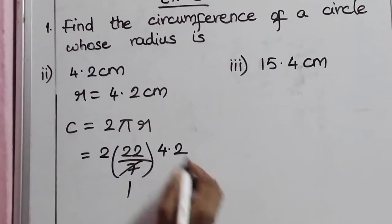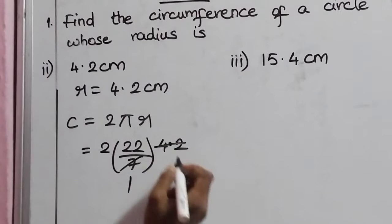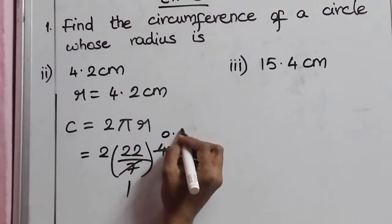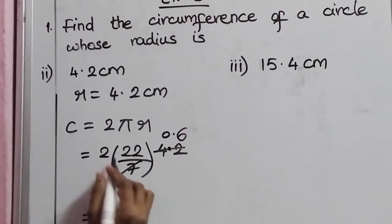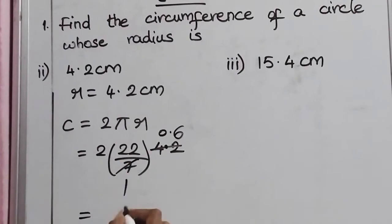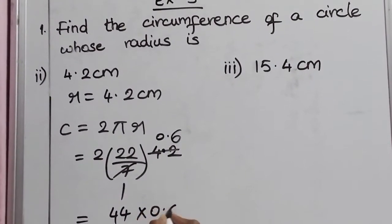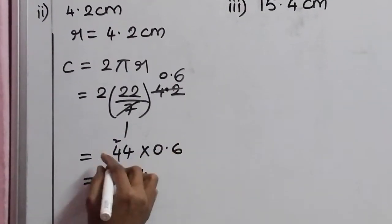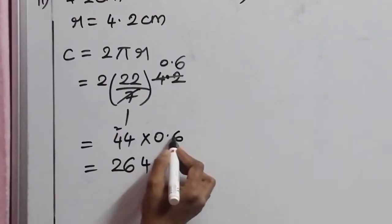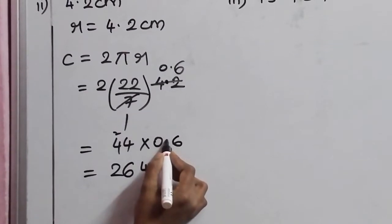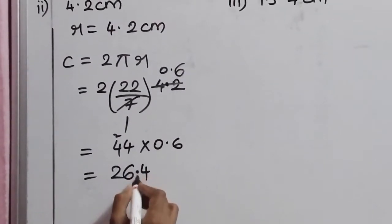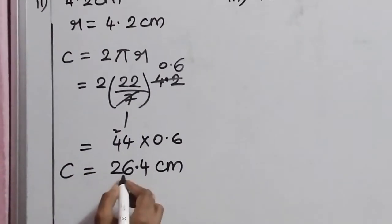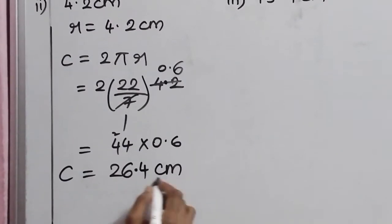Let's cancel. 7 goes into 4.2 — since 7 × 6 = 42, we get 0.6. This gives 22 × 2 = 44, and 44 × 0.6: 6 × 4 = 24, carry 2; 6 × 4 = 24, giving 26. After one decimal digit, place the point. So the circumference of the circle is equal to 26.4 centimeters.